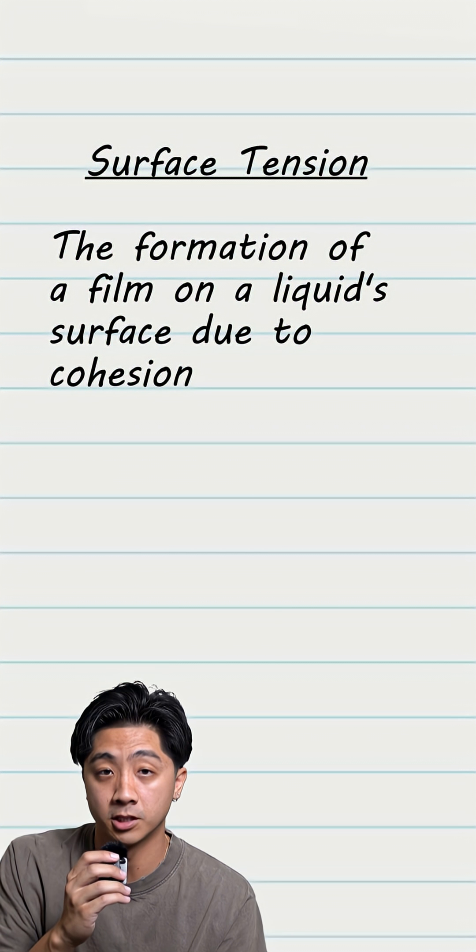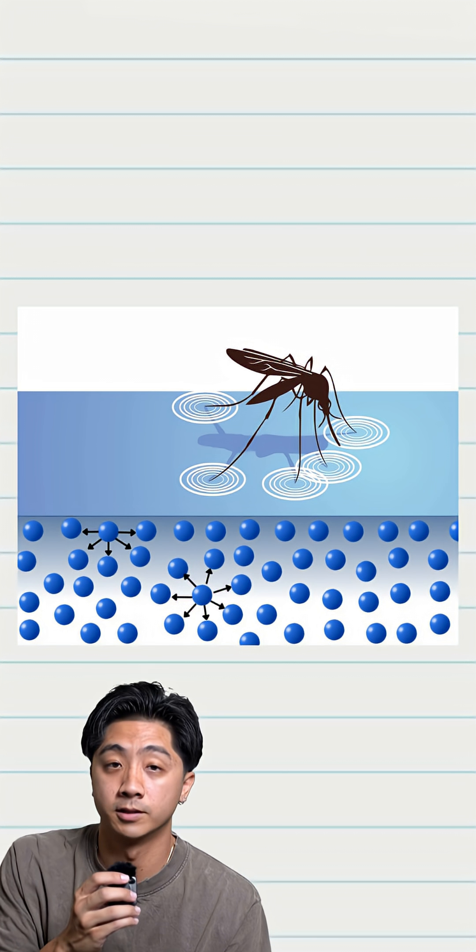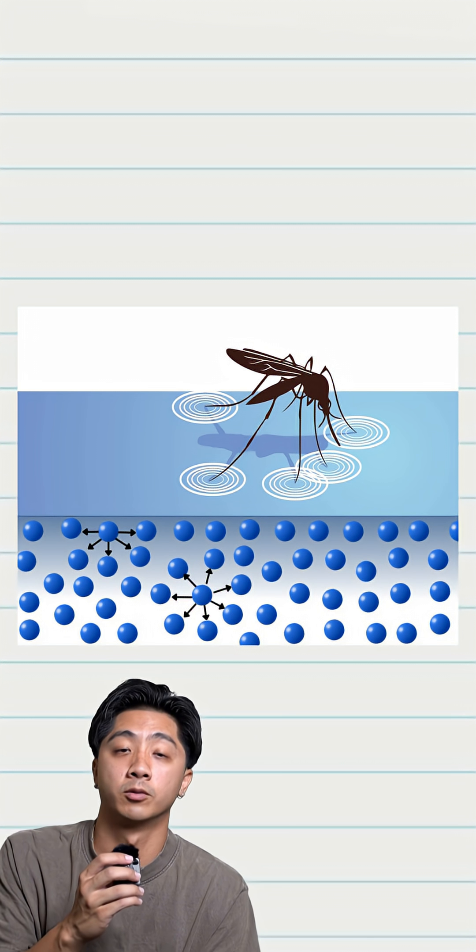This results in what's called surface tension, where molecules form hydrogen bonds at the surface of the water. This allows certain insects, like the water strider, to stay on top of the water without sinking.